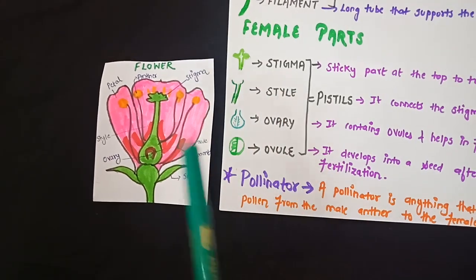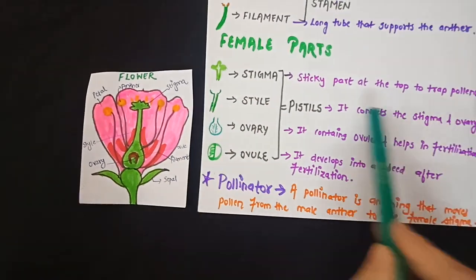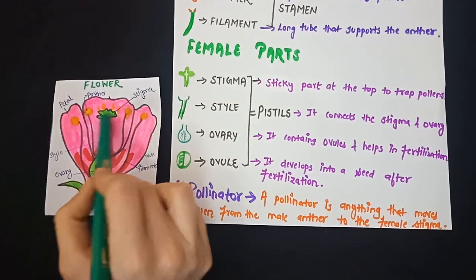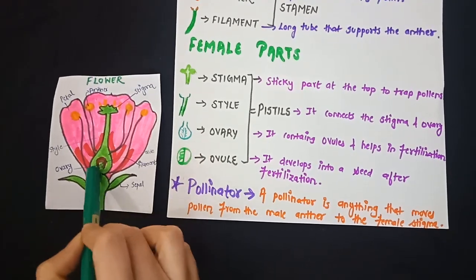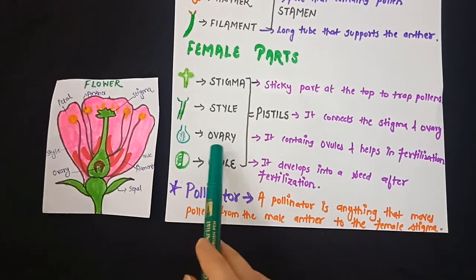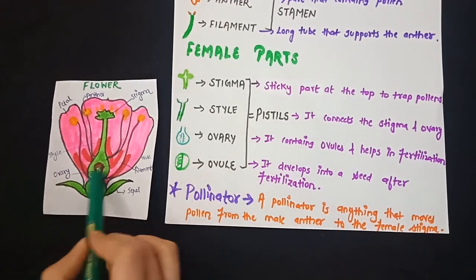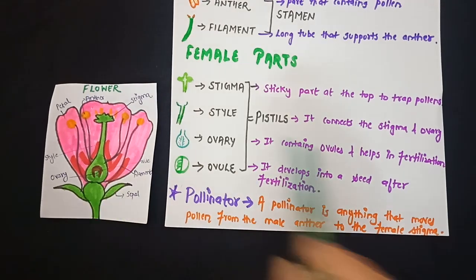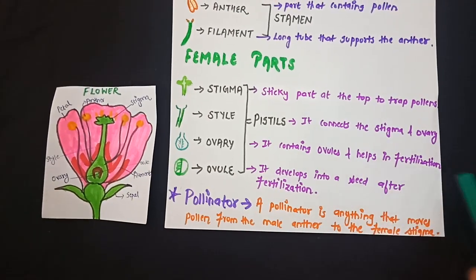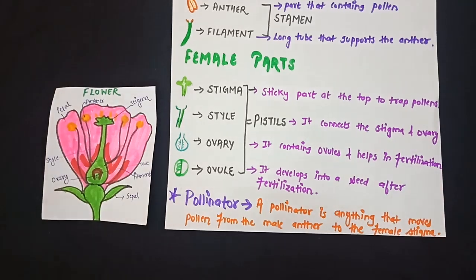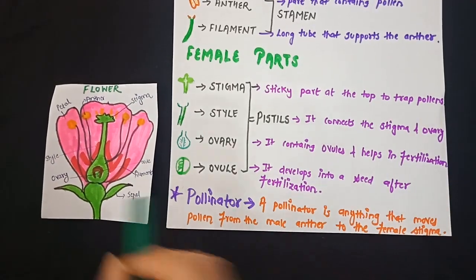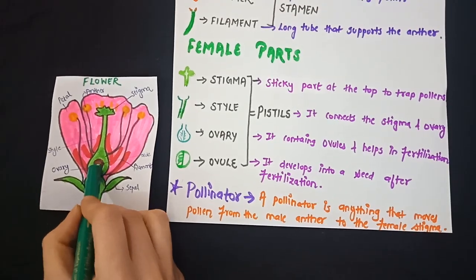The second part is the style — it connects the stigma and ovary. This one is your style. The third part is the ovary — this round portion. It contains ovules and helps in fertilization, meaning later on it will help in the reproduction of a new seed.